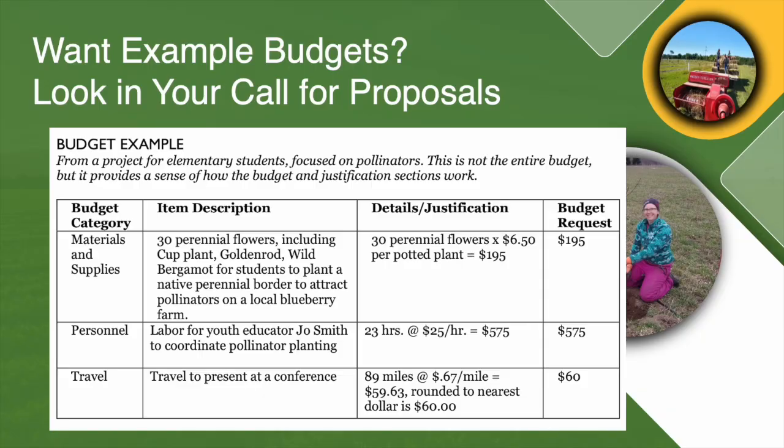We do need you to round to the nearest dollar. So let's say you're driving to a conference to present about your findings and it ends up totaling $58.30 — you'd round down to $58. If you'd like to see some example budget line items, we've got those in the call for proposals for the different grant programs, so definitely take a look at those. The links are in the video description. And if you still have questions, reach out to SARE staff — we'd be happy to walk you through how to make your budget because we want your project to succeed.